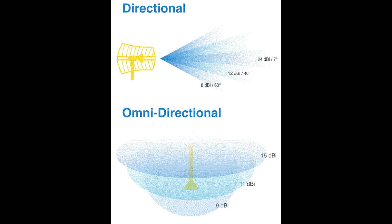Antenna rating is one of the things that you need to look for. When a wireless signal is low and is affected by heavy interference, it might be possible to upgrade the antenna to create a more solid wireless connection by getting a higher antenna rating. To determine the antenna's strength, refer to its gain value.